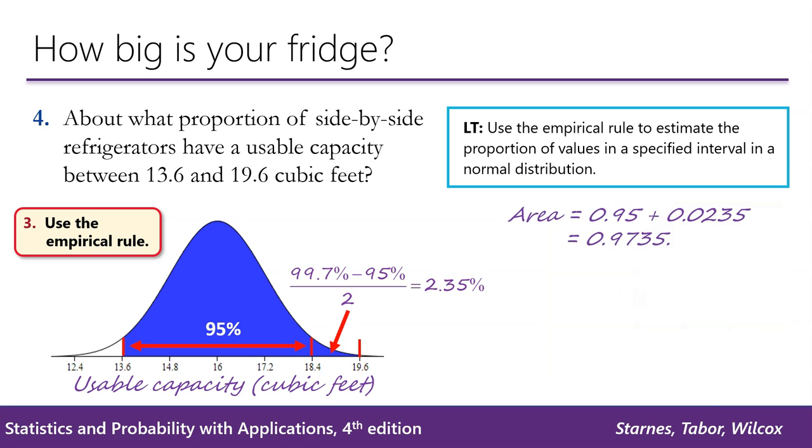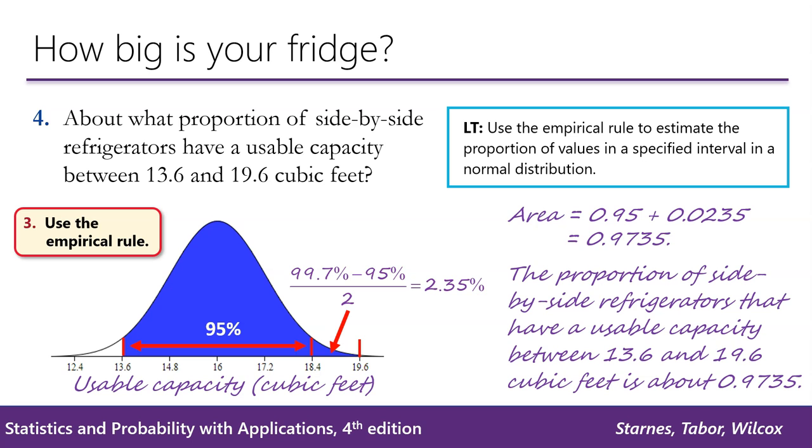So the grand total shaded area is 0.95 plus 0.0235 equals 0.9735. That means that the proportion of side-by-side refrigerators that have a usable capacity between 13.6 and 19.6 cubic feet is about 0.9735. Notice that we left this answer in decimal form because the question asks for a proportion rather than asking for a percent.